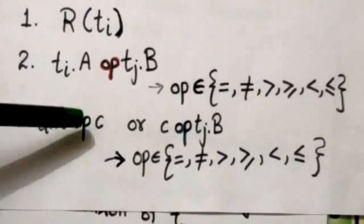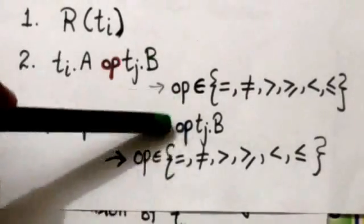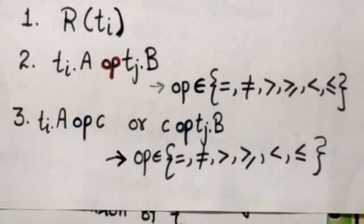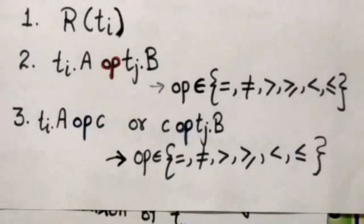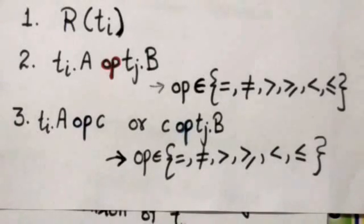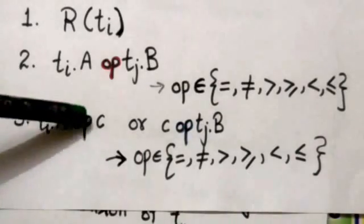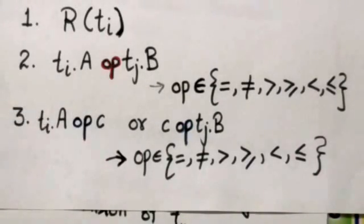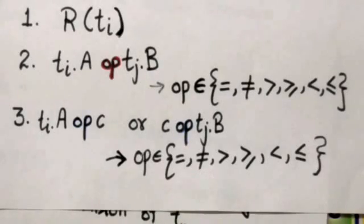The third type is an atom of the form ti.A op c or c op tj.B, where ti and tj are tuple variables, A is an attribute of the range relation of ti, and B is an attribute of the range relation of tj. C is a constant value and op is a comparison operator such as equal to, not equal to, less than, less than or equal to, greater than, and greater than or equal to.